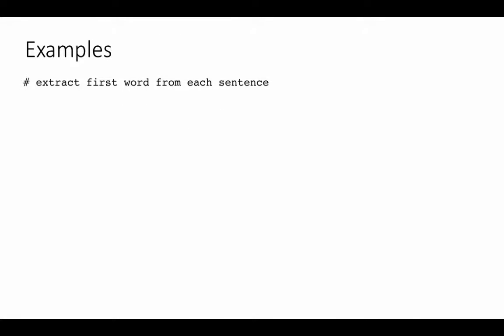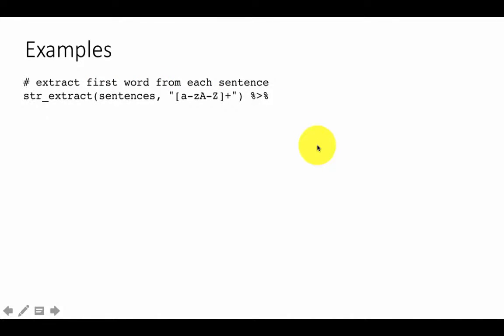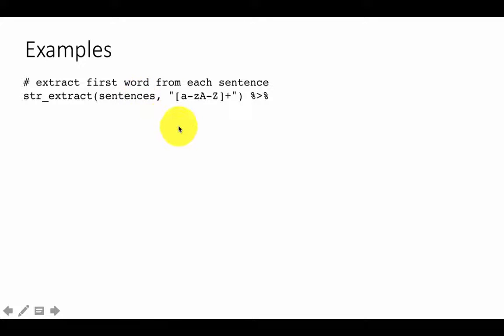Let's try some examples. The first example: we are given a bunch of sentences, and we want to extract the first word from each sentence. We are going to use the `sentences` vector that exists in the stringR package.